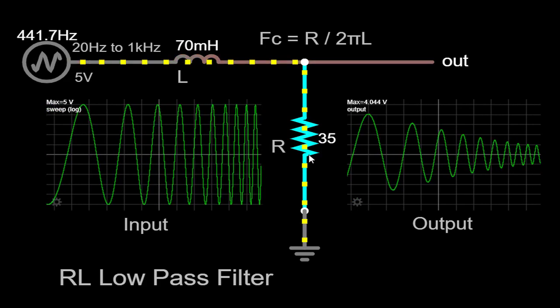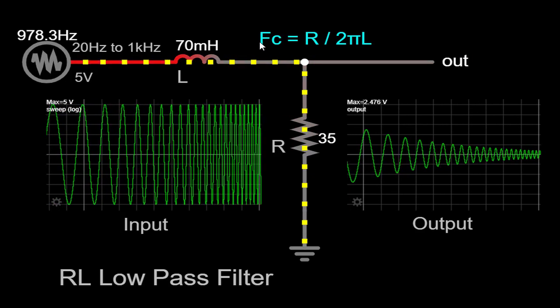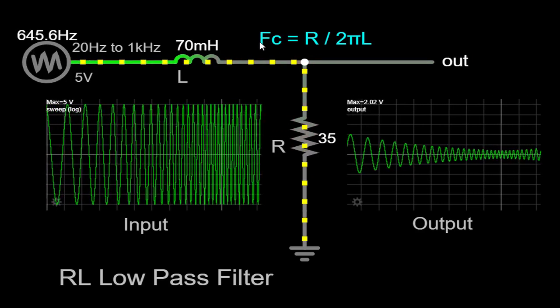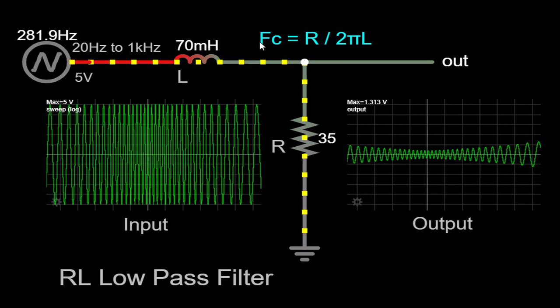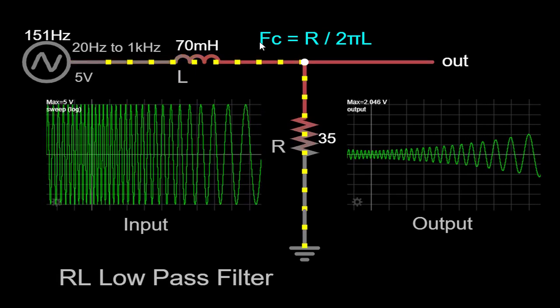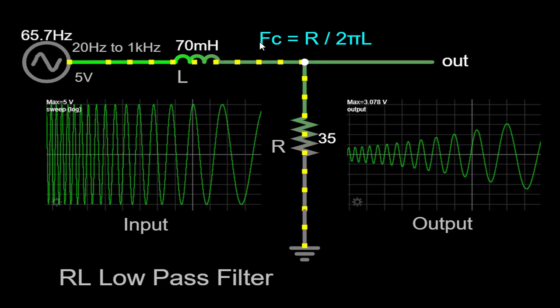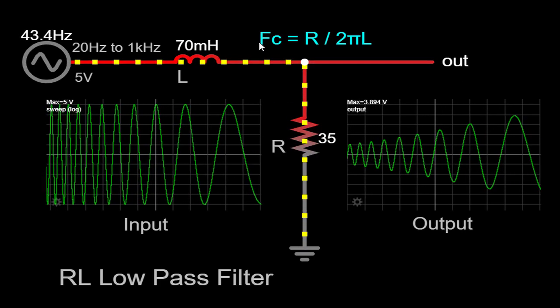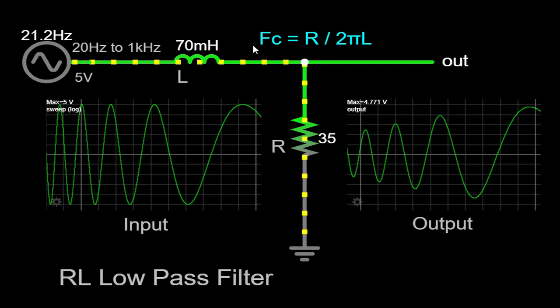The cutoff frequency is a fundamental parameter of any low-pass filter, including the RL low-pass filter. It represents the frequency at which the filter begins to significantly attenuate the input signal. Frequencies below the cutoff frequency pass through the filter with minimal attenuation, while frequencies above the cutoff frequency experience increasing levels of attenuation.